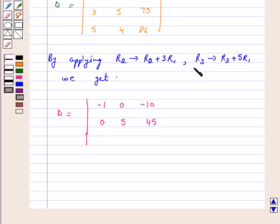Again, R3 goes to R3 plus 5R1, we get 0, 4, 3 6.